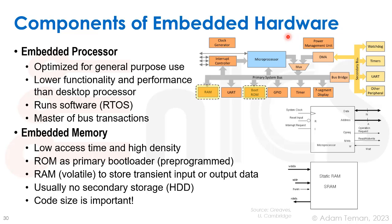The second component we'll almost always have is embedded memory. This memory can be tightly coupled to the microprocessor — the microprocessor can't run at all without some sort of tightly coupled memory. We may also have secondary memory hanging off the bus, such as a boot ROM to load and run our program, and RAM to store volatile transient input or output data. We usually won't have secondary storage like a hard disk on an embedded system due to size, power, and latency constraints. So code size becomes an important factor — you need your code to fit inside the RAM and boot ROM.